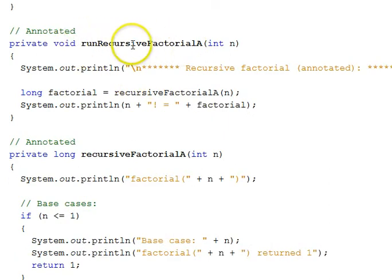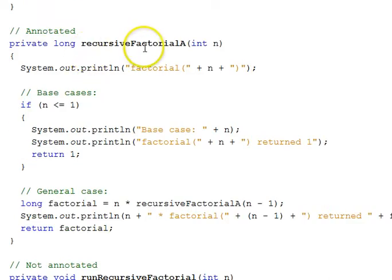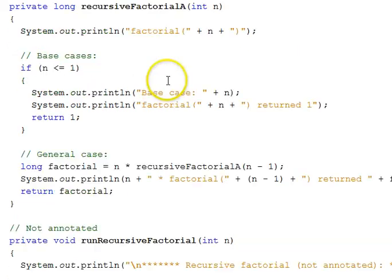So our recursive solution right here, run recursive factorial A, the run keyword, this is the manager code that is actually going to run the real recursive annotated function, which is right here. The manager code is simply going to display that we are beginning this recursive factorial annotated phase of the program. It has a long called factorial and it calls recursive factorial A, this function right below it, to get the answer. And then it will output the answer, annotating the output. So here is our recursive function. The input is an integer N, and we print out some annotations, but the code here...